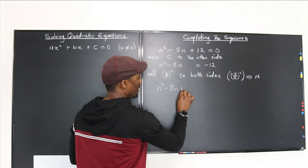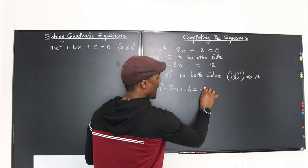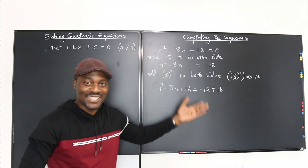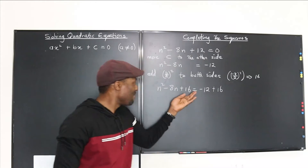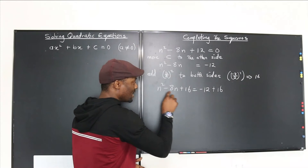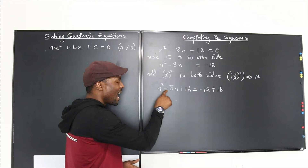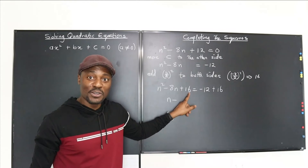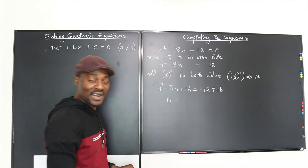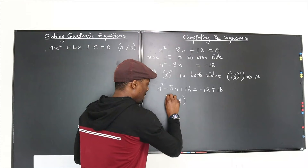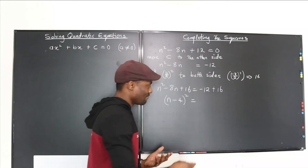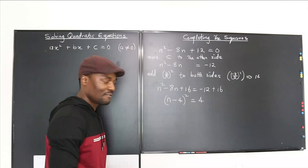We now have n squared minus 8n plus 16 equals negative 12 plus 16. Once you've added that value, the left side is already a perfect square — just rewrite it as n minus 4 squared. We use minus because there was a minus in the original. The number 4 is always the square root of the constant term or half of b, keeping the original sign.